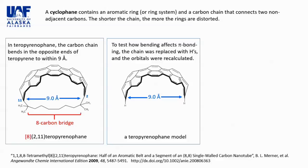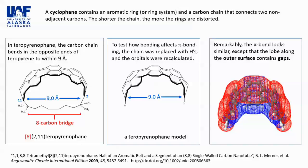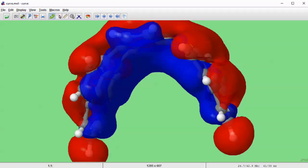To test how the bend affects pi-bonding, the chain was replaced with hydrogens, and the orbitals were recalculated. Remarkably, the pi-bond looks similar, except that the lobe along the outer surface contains gaps.